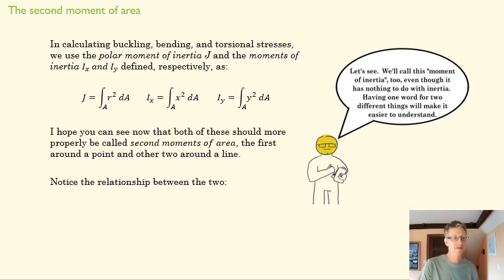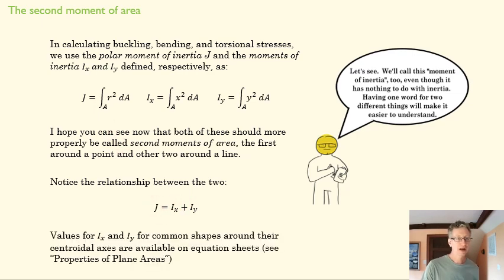All right. So these are second moments of area around a point and a line, and there's a nice relationship between the two of them, right? If I add these two together, I get this one. Now notice these are always positive, right? X squared and Y squared means that all the negatives get, we get rid of them. They can be zero only if all of the mass is along that axis. So they're almost always going to be a positive non-zero number. And this is also going to be a positive non-zero number. You can look these up. I put properties of plane areas on Moodle that you can use, but you can also just look them up pretty readily if you need them for a problem.